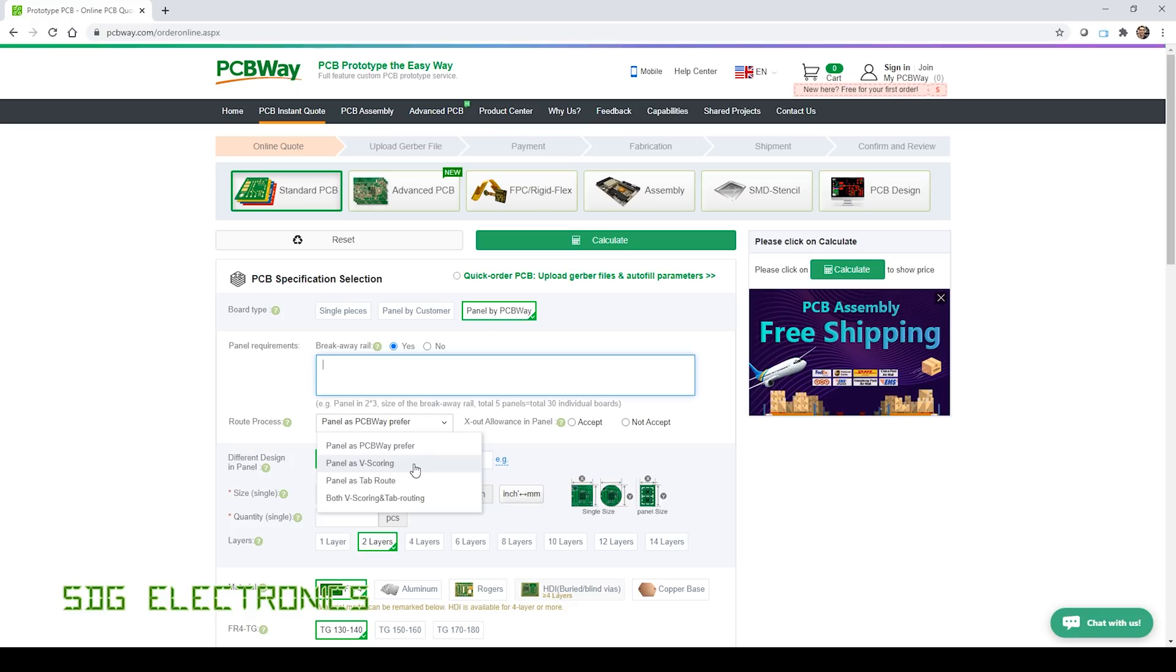Or you can have V scoring only. You can do it as a tab, which is very similar to the design that I had previously, where there's little bits of PCB holding the inner boards to the panel. Or you can have a combination of both V scoring and tab routing.